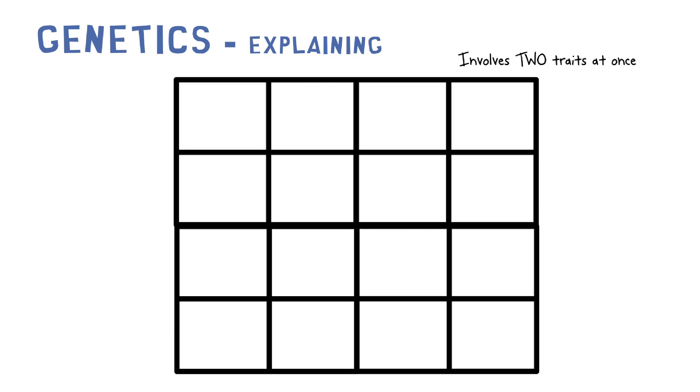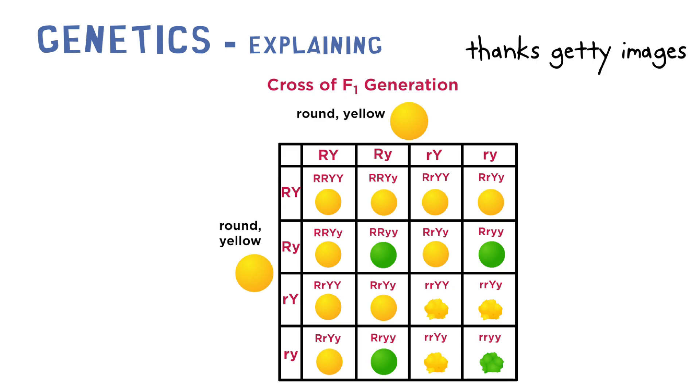This one involves two traits, for example eye color and hair color. It's a four by four grid. And here's how you would use it: basically the same as a regular Punnett square, just with extra steps.